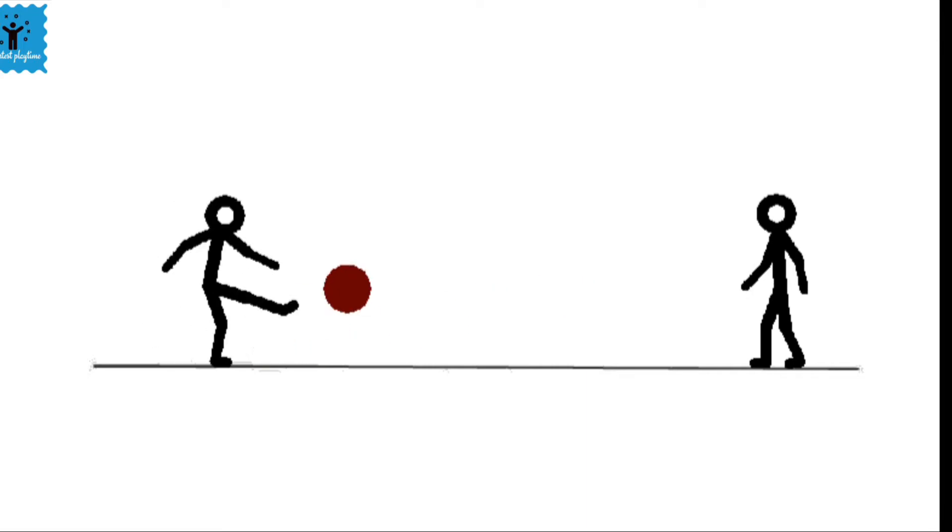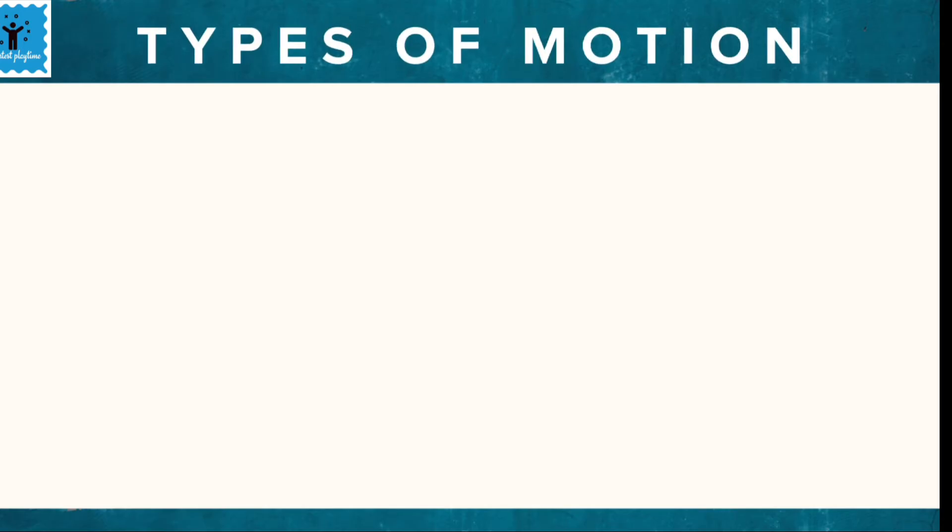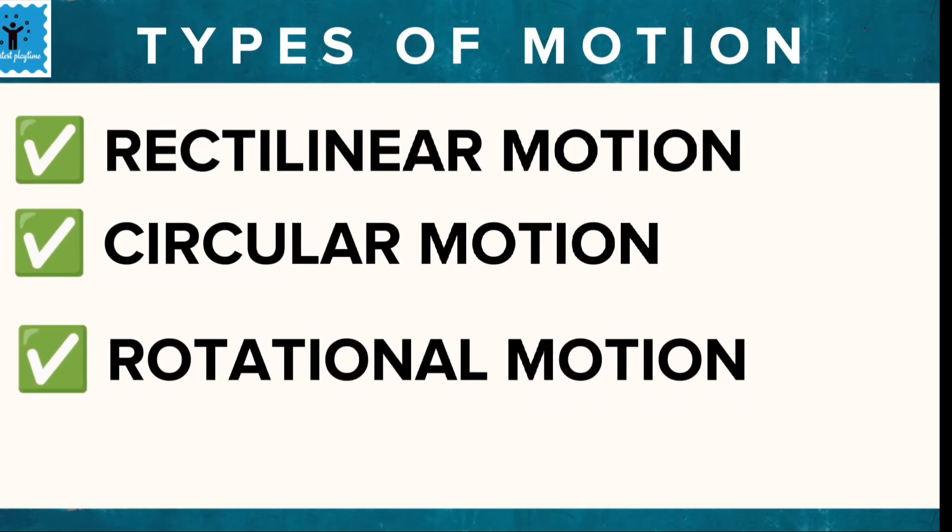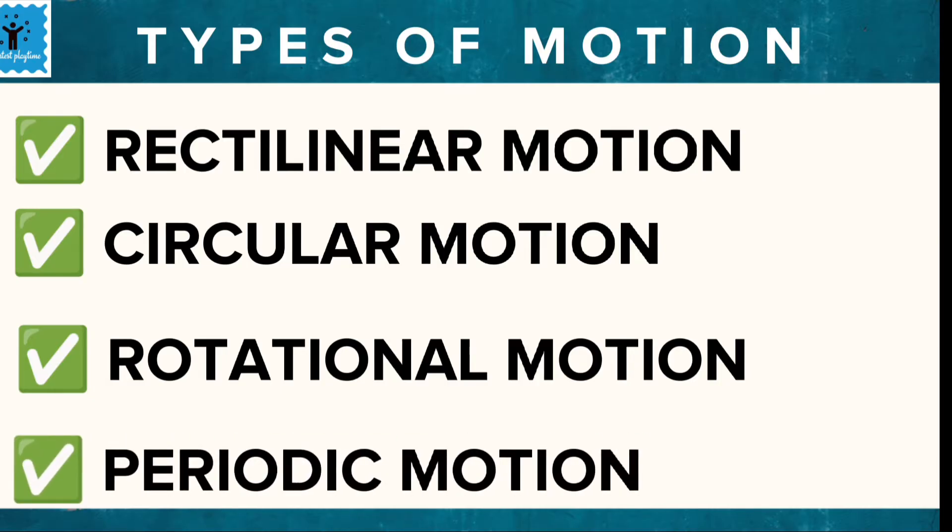Every object moves in different ways. So there are four different types of motion: rectilinear motion, circular motion, rotational motion, and periodic motion.